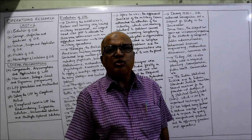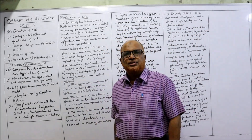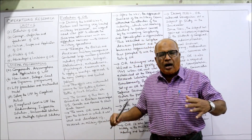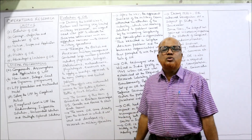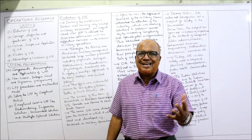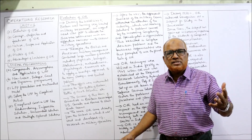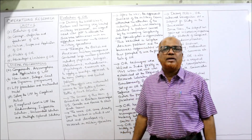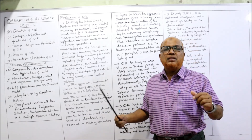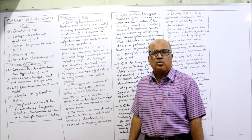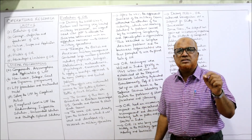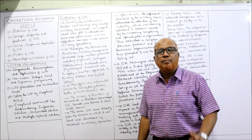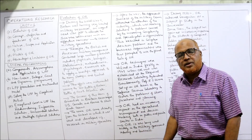Now, evolution of the subject operational research. Operational research means research of operations — how to effectively utilize scarce resources. We have scarce resources, and by using those scarce resources we have to accomplish some objective. How to attain the objective with limited resources, how effectively we can utilize the resources — that is the main theme of the subject of operational research. A number of techniques are there in OR in order to attain the objective.